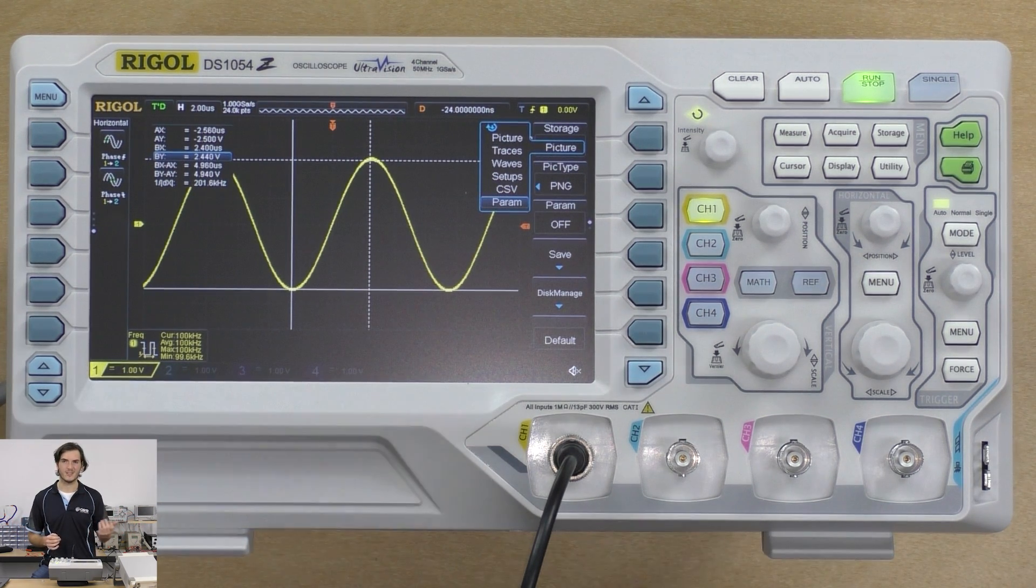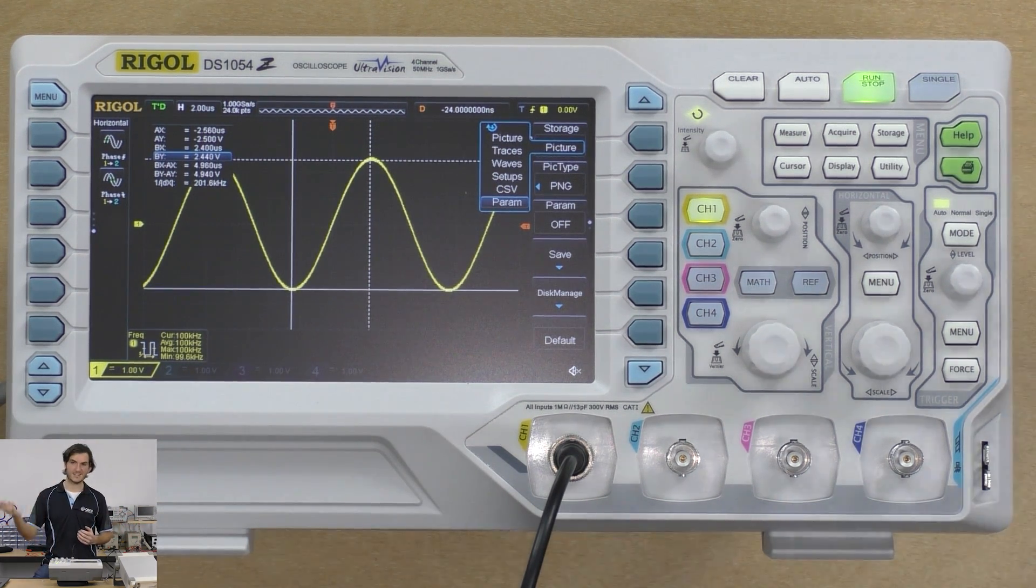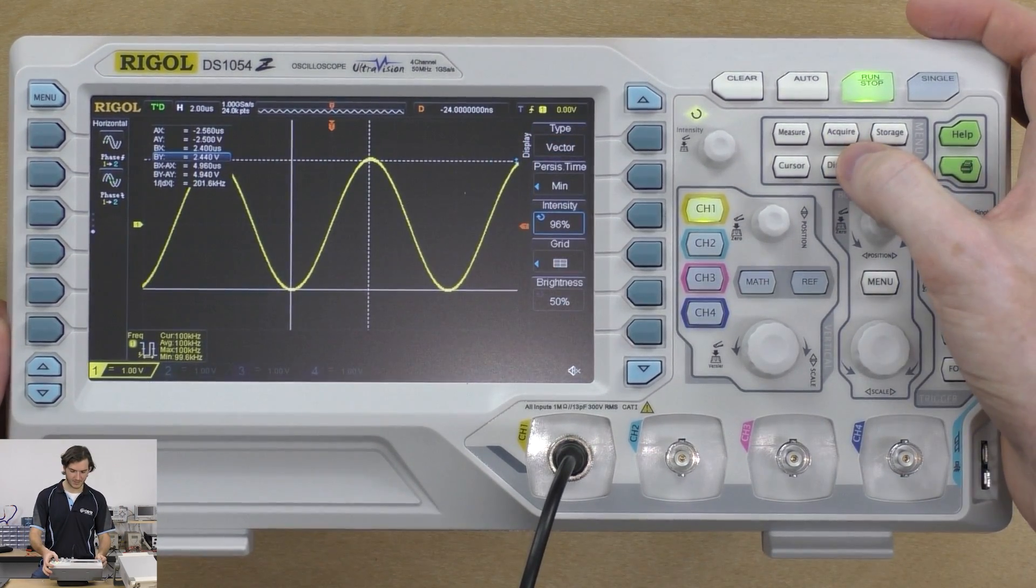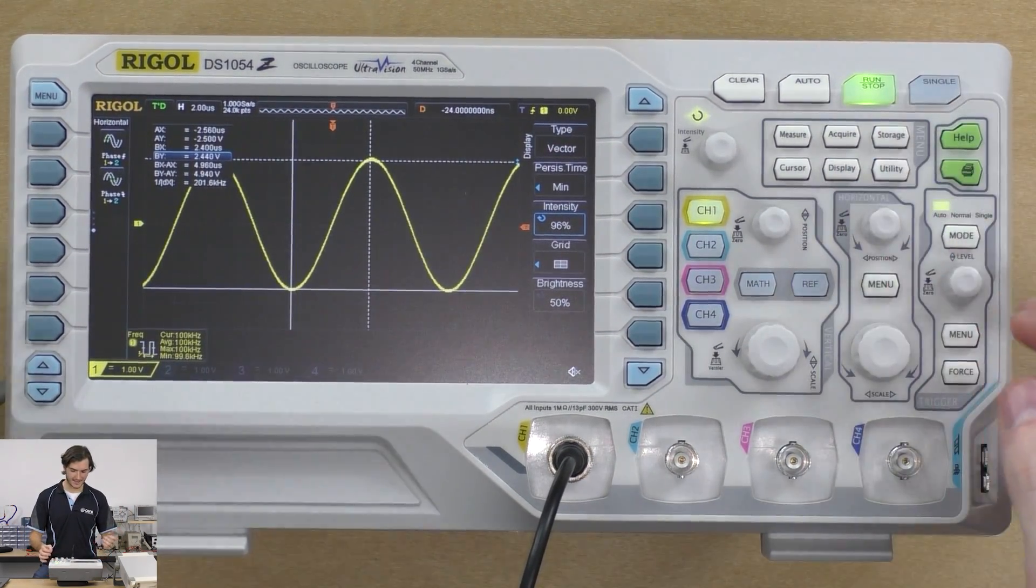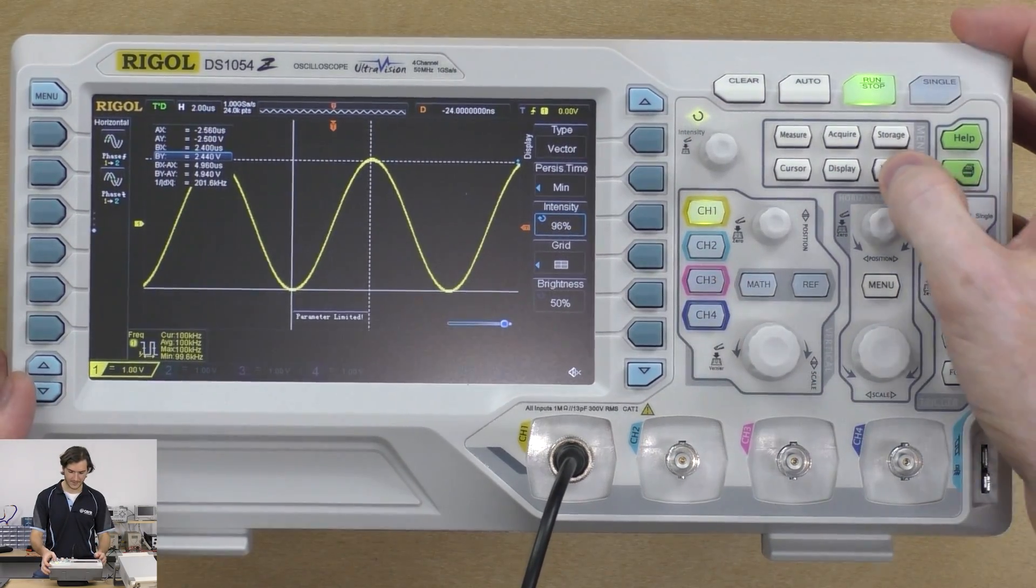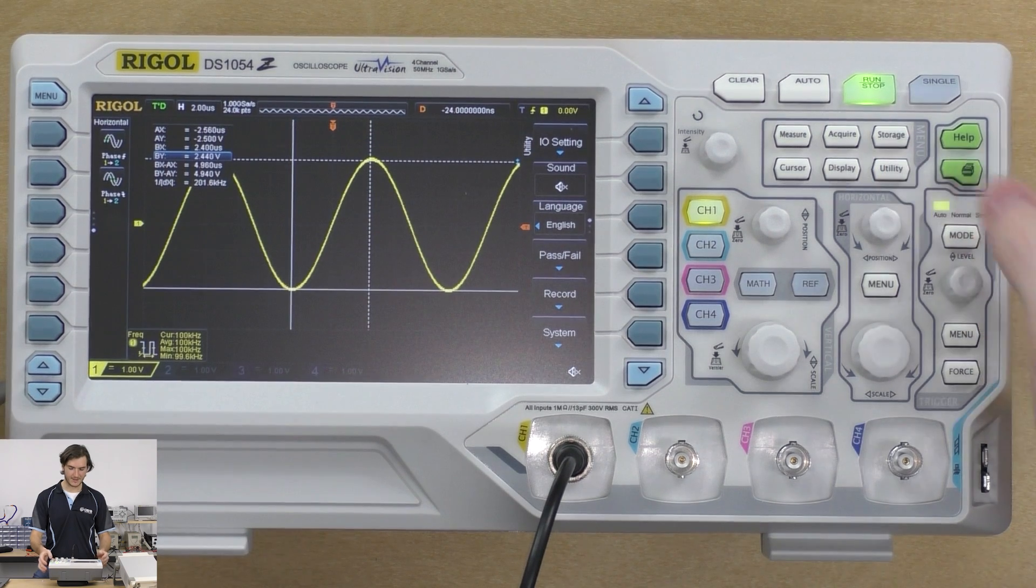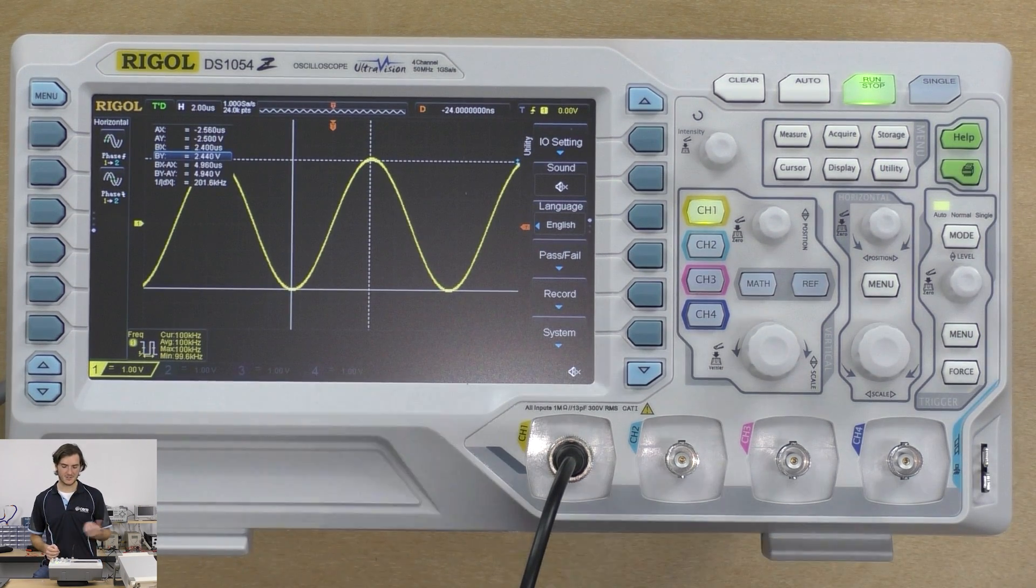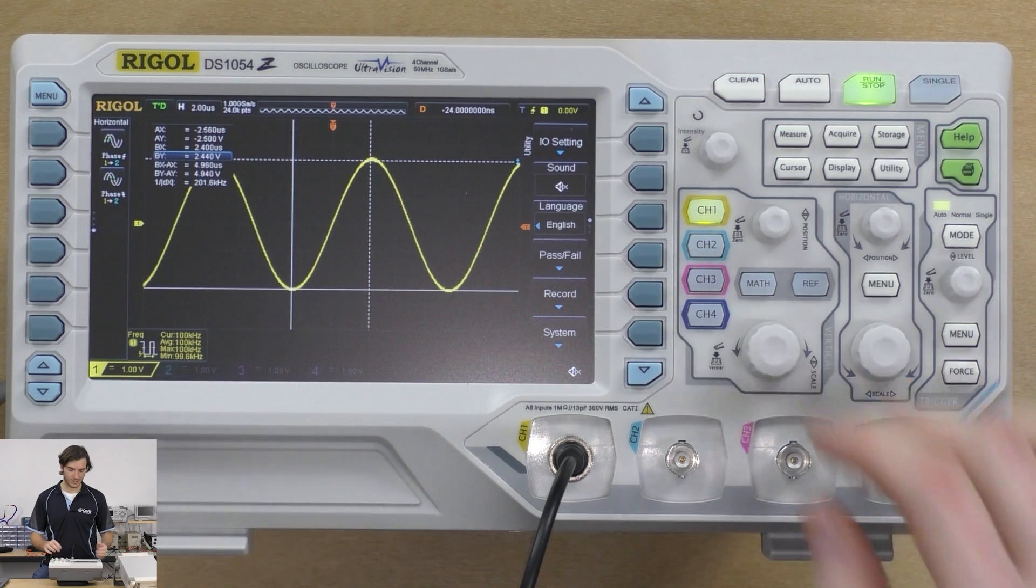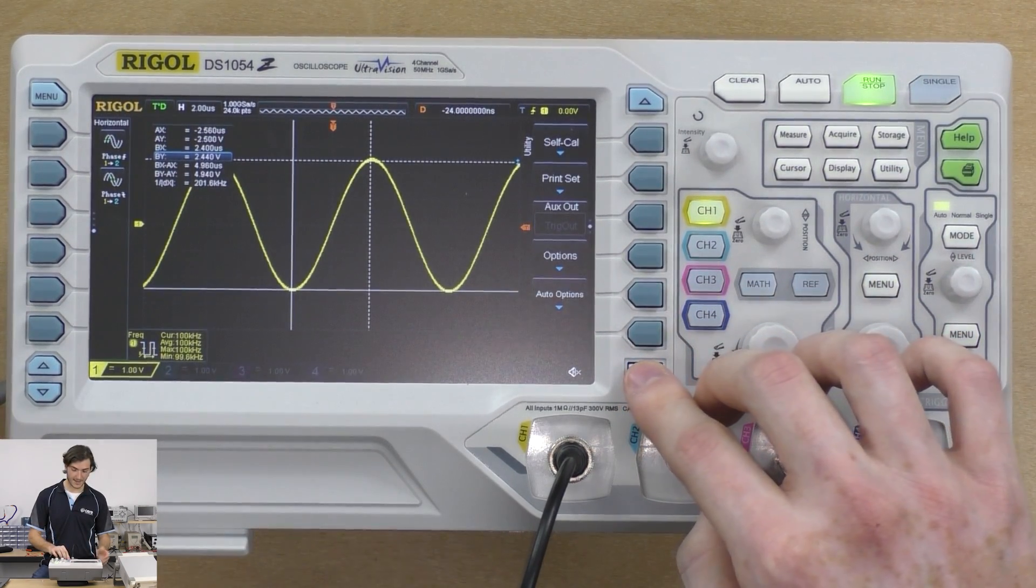The display menu has intensities and brightness and display types of vector and presumably raster. The utility menu lets us change things like how the scope works: sound feedback, language, there's the self-calibration mode and other various options.